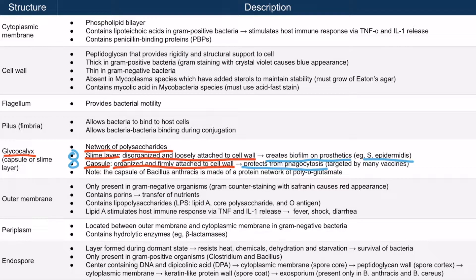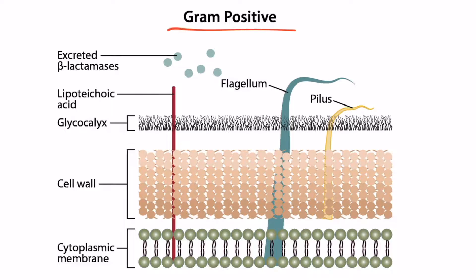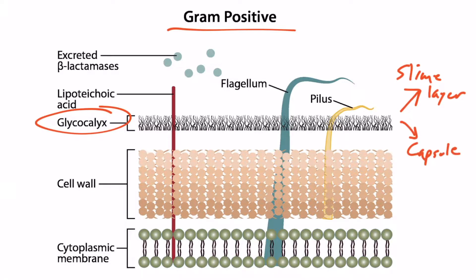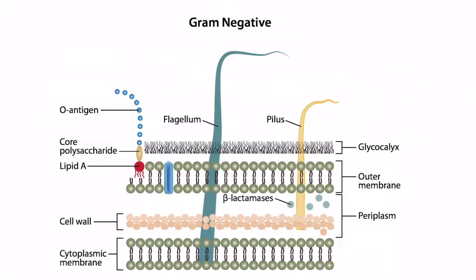It's also important to know that vaccines often target this capsule. Looking at the gram-positive image, we can see the glycocalyx right here — it's the most superficial portion of this gram-positive bacteria, and it could be a slime layer or a capsule. Looking at the gram-negative bacteria, we can see that same glycocalyx.